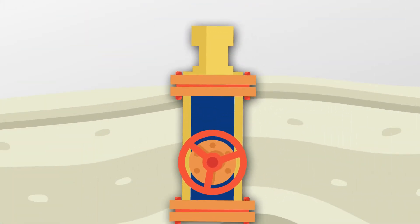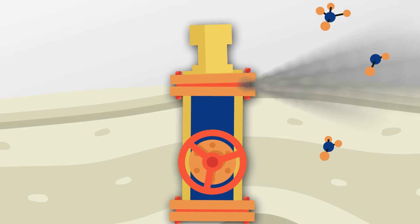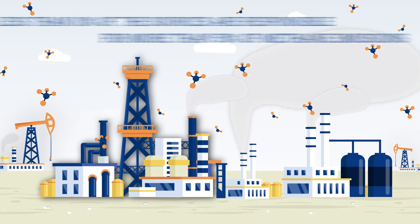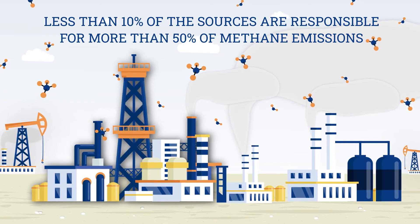First, a small number of super emitters, such as leaking pipes and valves, are responsible for the majority of methane emissions from oil and gas. In fact, super emitters are responsible for more than 50% of emissions overall.